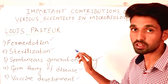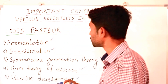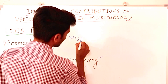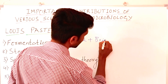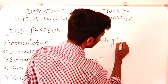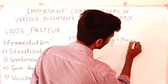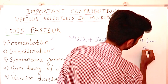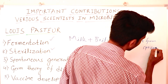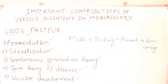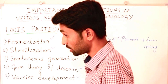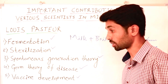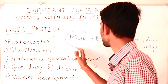The best example of sterilization is boiling of milk to prevent it from spoiling. When we boil the milk to a certain temperature, the bacteria inside the milk will get destroyed or killed, so that we can use this milk for a long time.